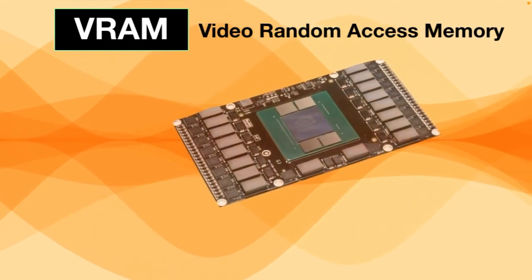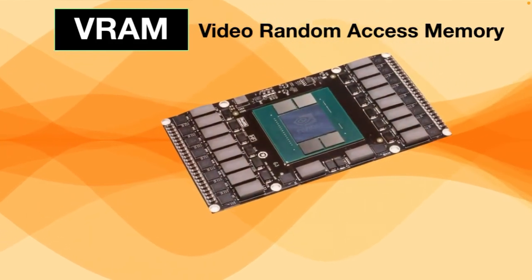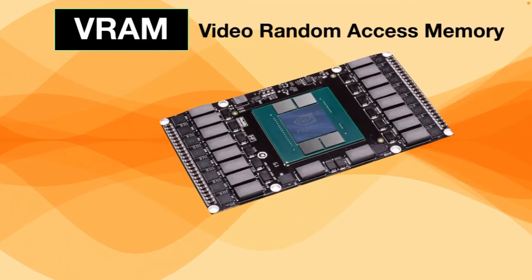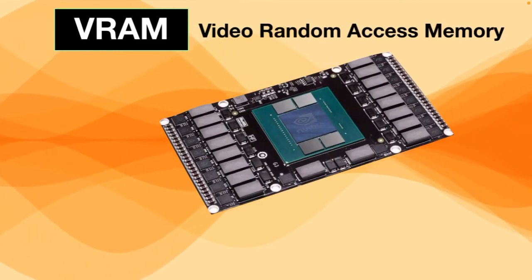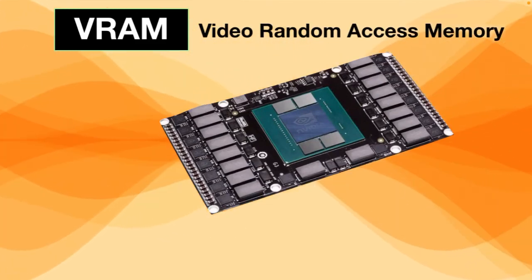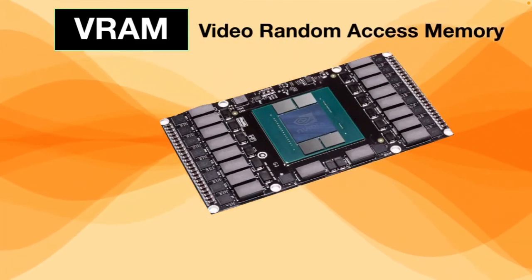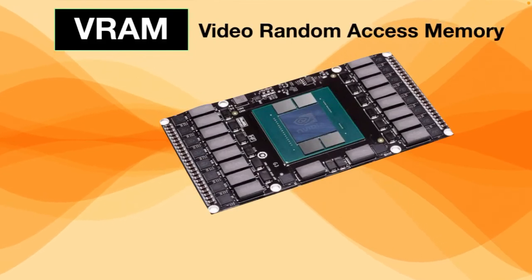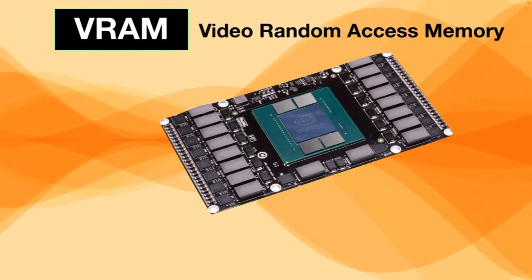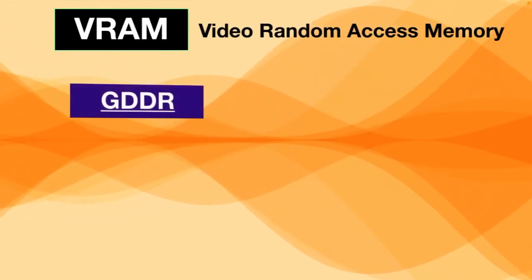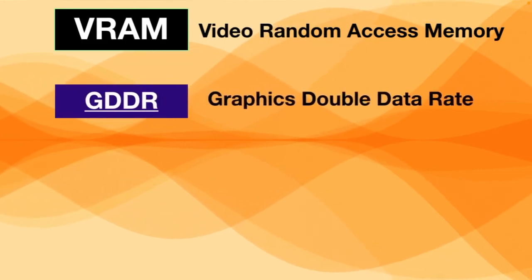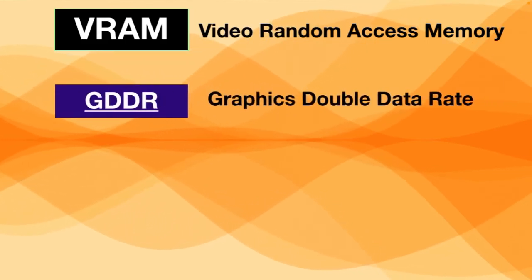VRAM is used during gaming, video editing, or other graphics-heavy activities. Video RAM is even faster than normal memory, and it usually comes in the form of GDDR — Graphics Double Data Rate — which is a specific type of memory optimized for graphics performance.